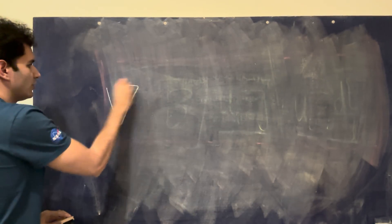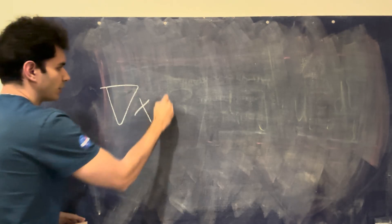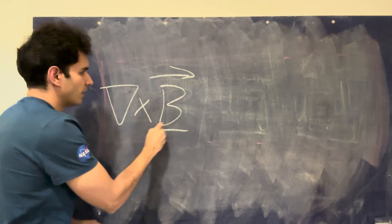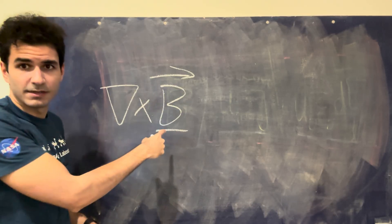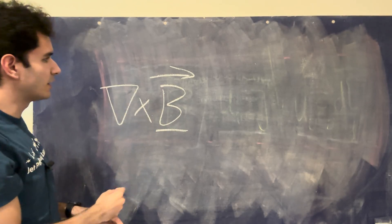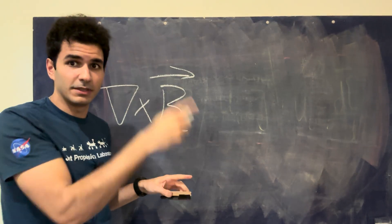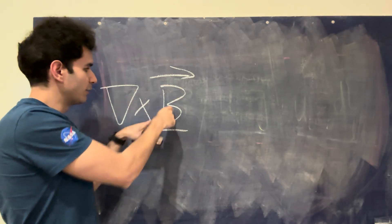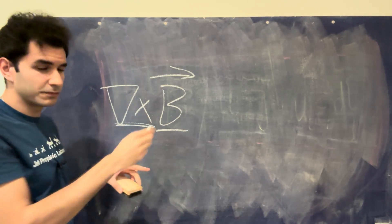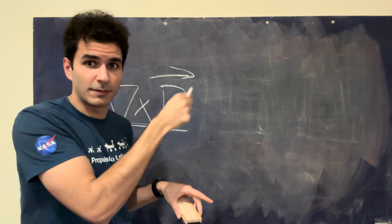So basically it starts out with this symbol right here, and then there's a B with an arrow. This basically means it's a vector. This B is the magnetic field. This upside down triangle with an X, or with a cross here, that means it's curling behavior. That means this variable, whatever it is in front of this upside down triangle with the X, it's creating some type of curl, some type of rotating behavior.